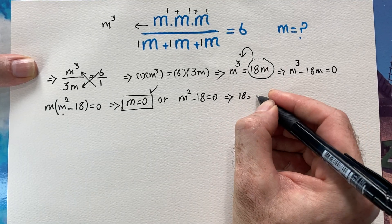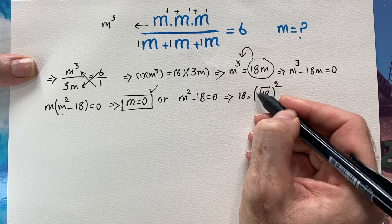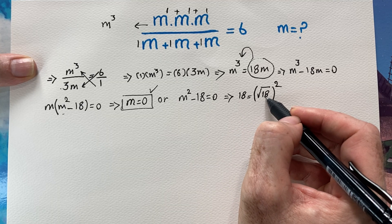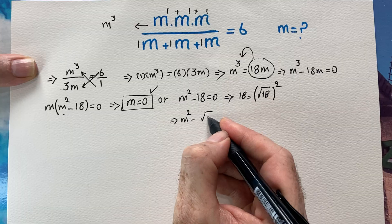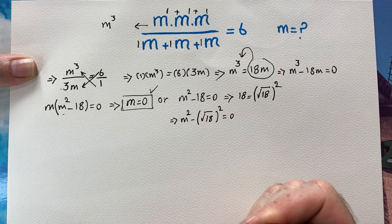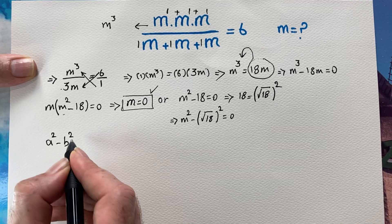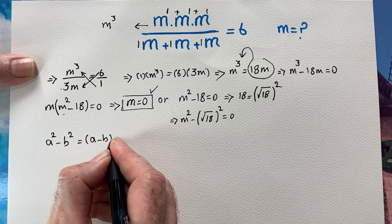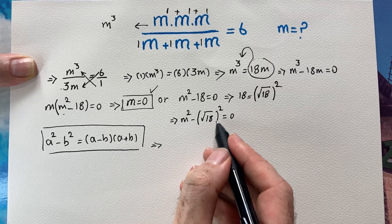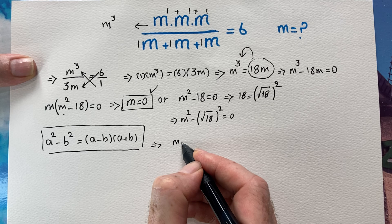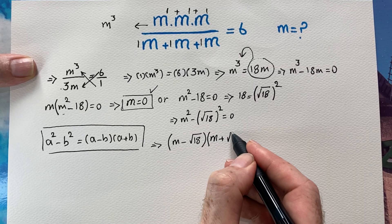To solve m squared minus 18 equals zero, I rewrite 18 in the form of the square root of 18 squared. That gives us m squared minus (√18)² equals zero. I apply the algebraic identity a² minus b² equals (a minus b)(a plus b). Our expression becomes (m minus √18) times (m plus √18) equals zero.